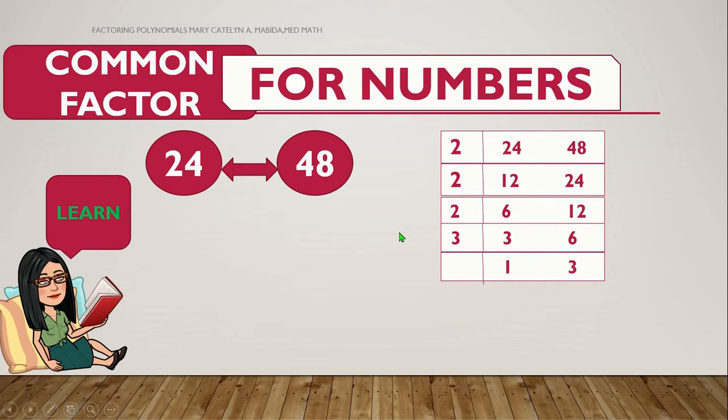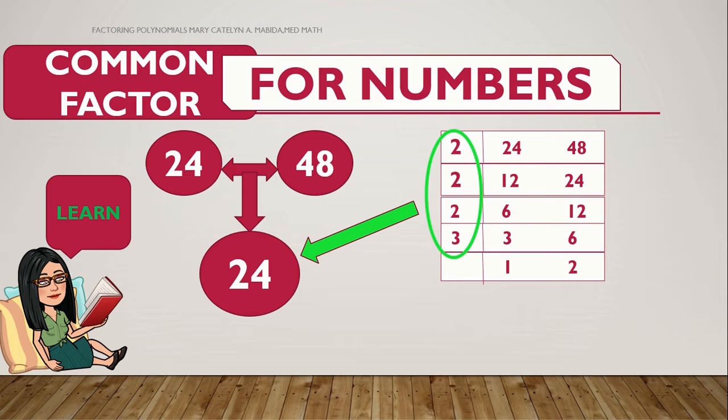So, we will stop right there. And then, we are going to multiply these numbers only. I repeat, these numbers only. The outer numbers that you can see on your left. All right. So, 2 times 2 times 2 times 3 is 24. And that is their greatest common factor.